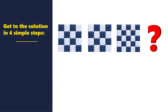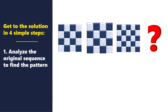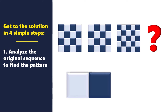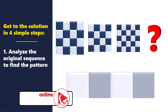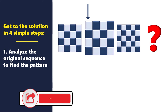Let's start with step one: analyze the original sequence of squares to find the pattern. Even though all objects are squares, two squares are 4x4 and the third square is 5x5. We can also see that all shapes have alternating colors.